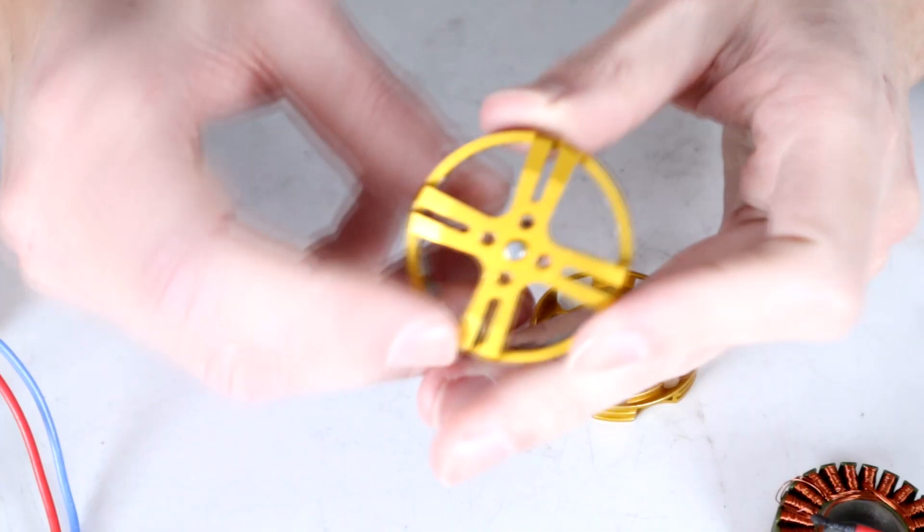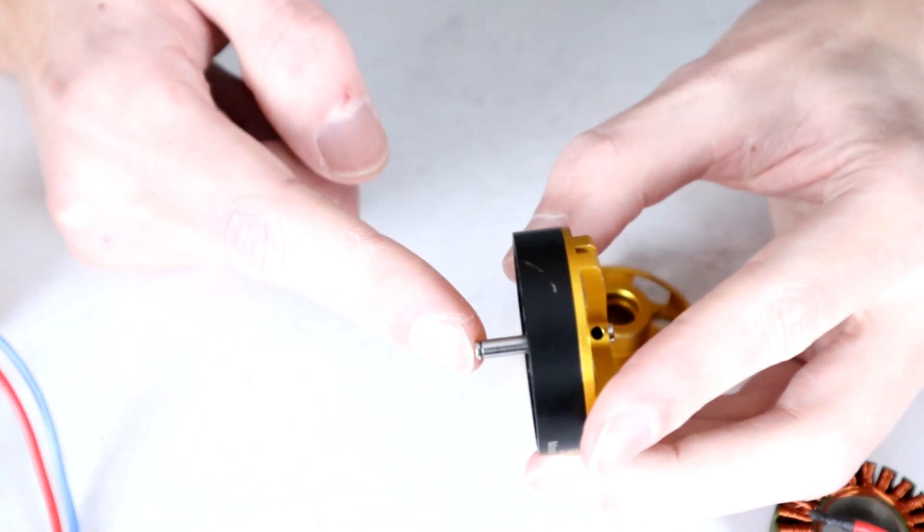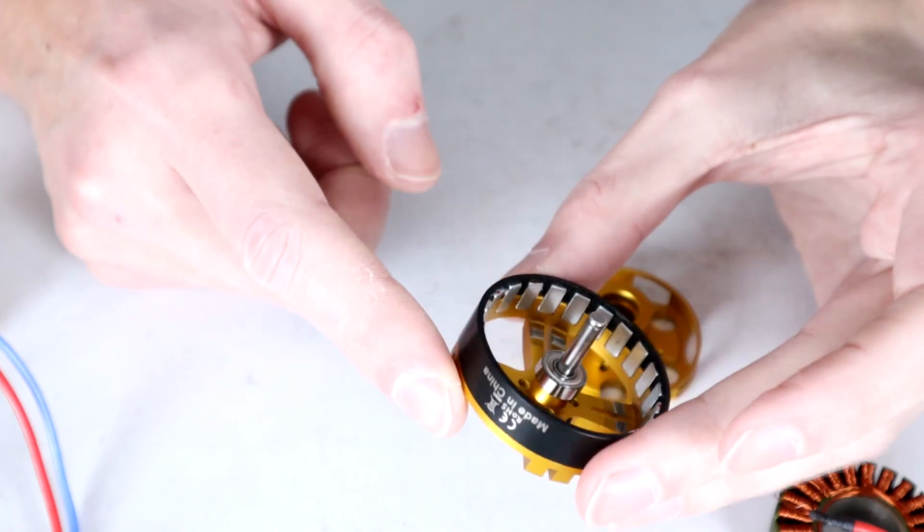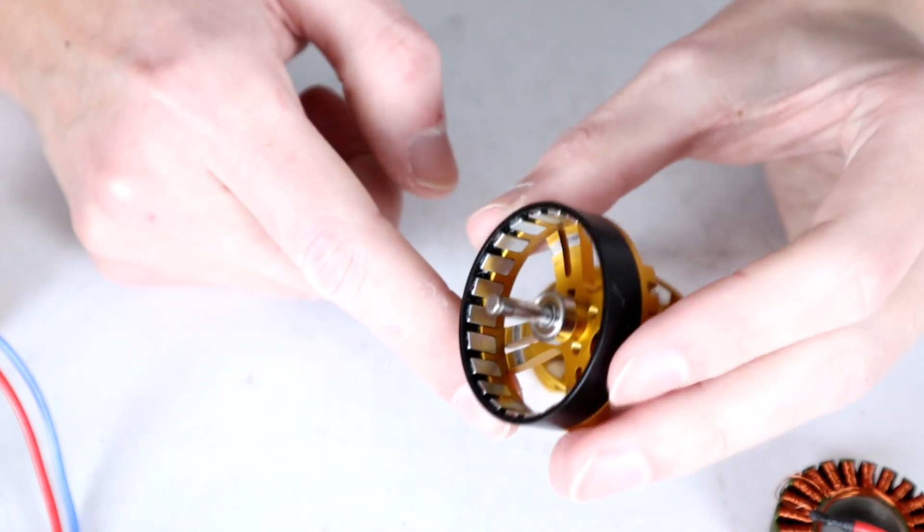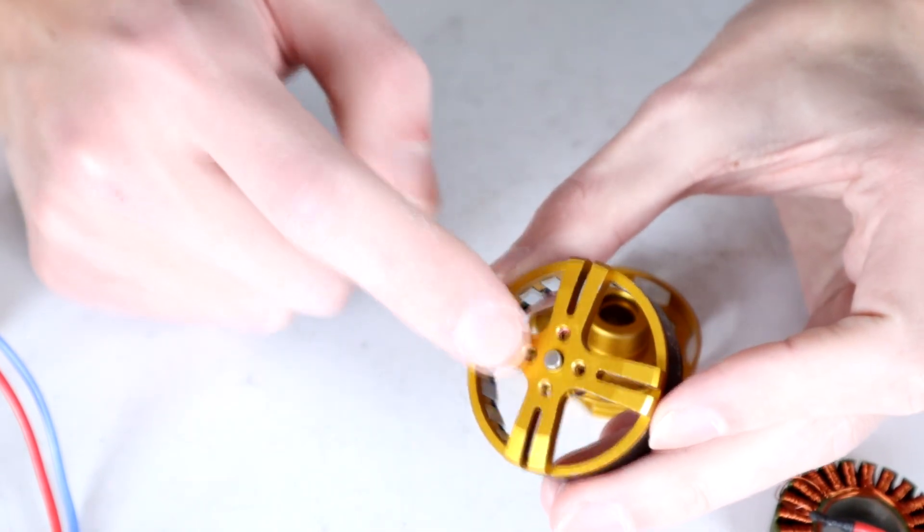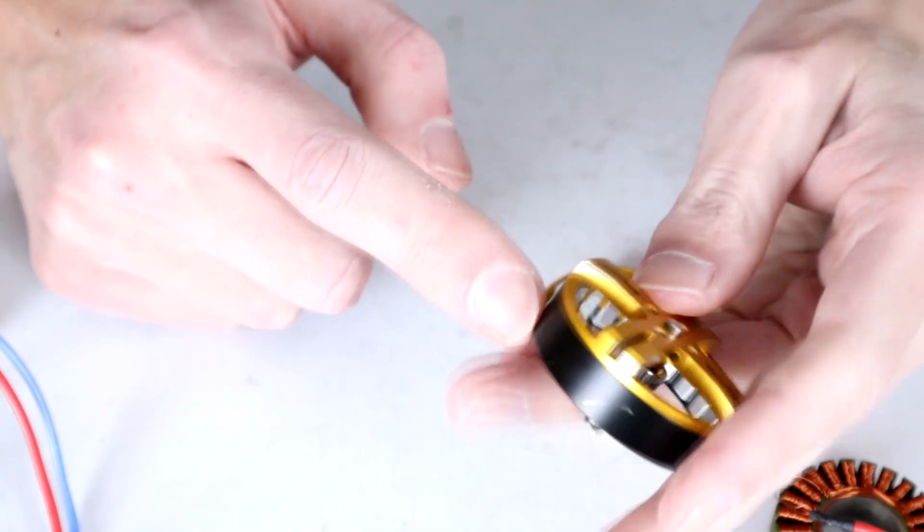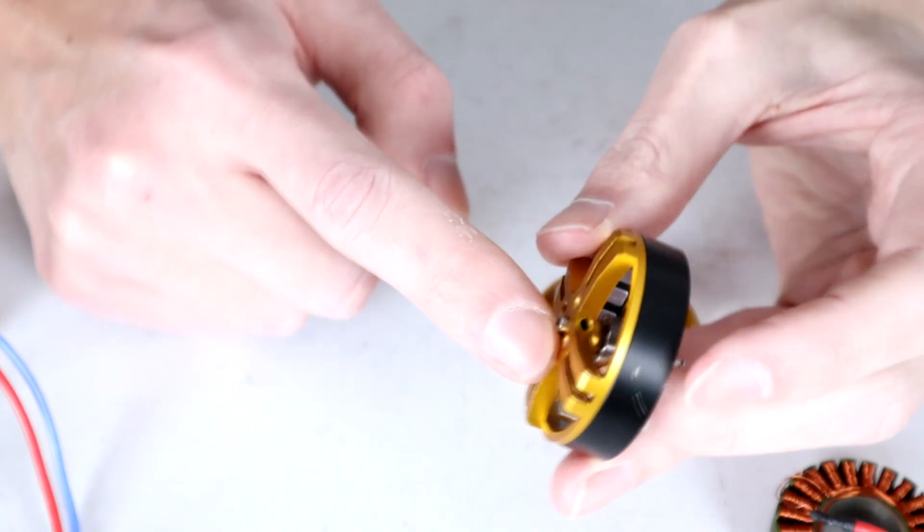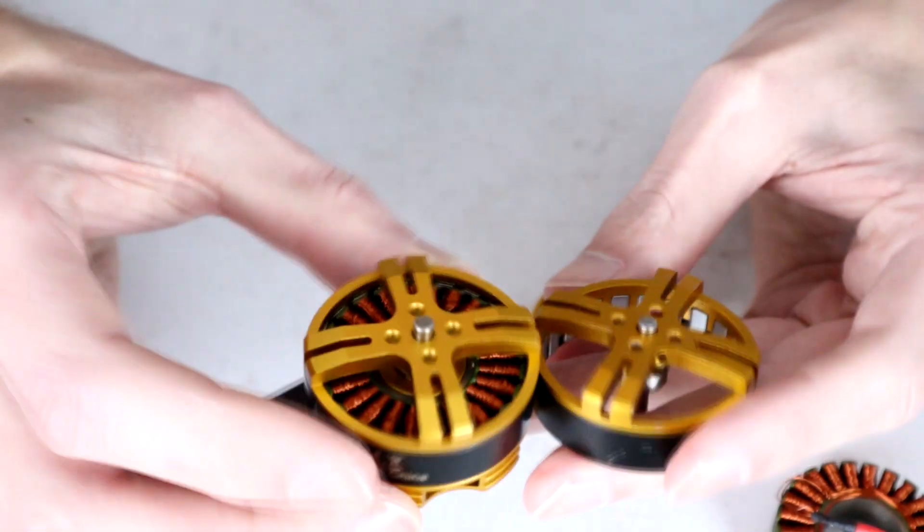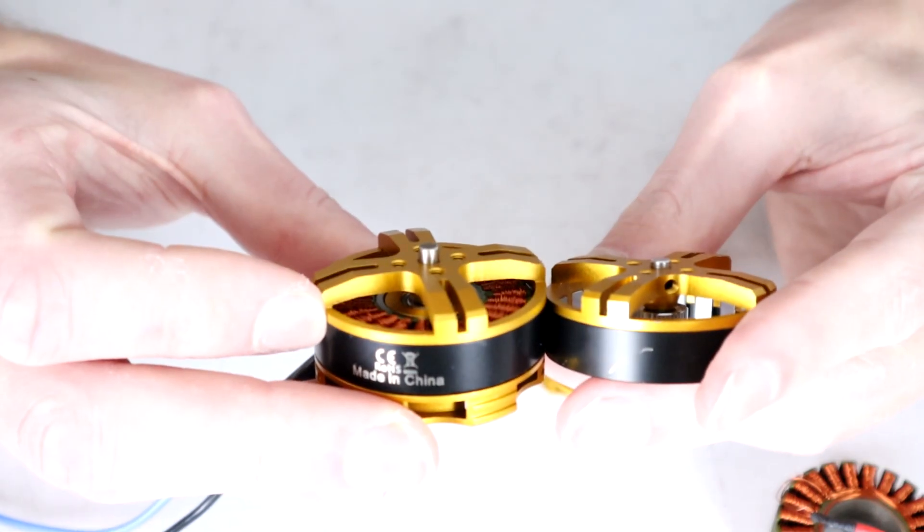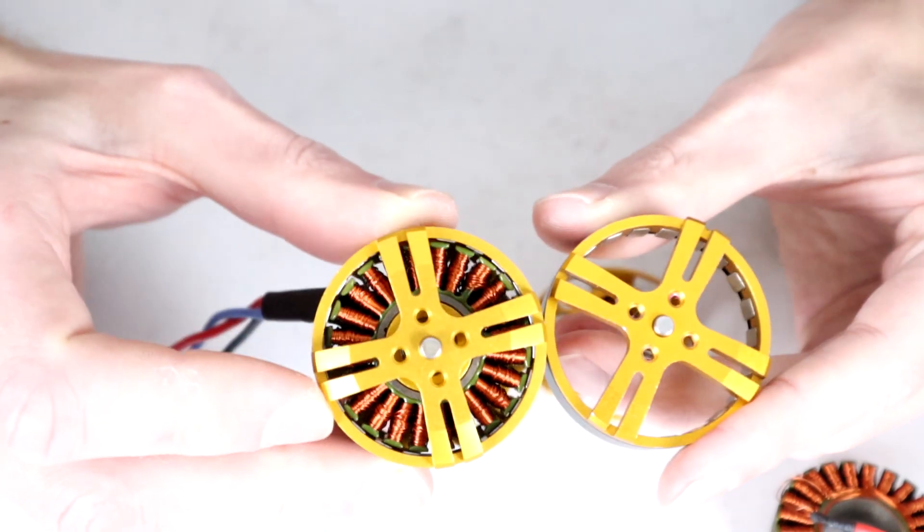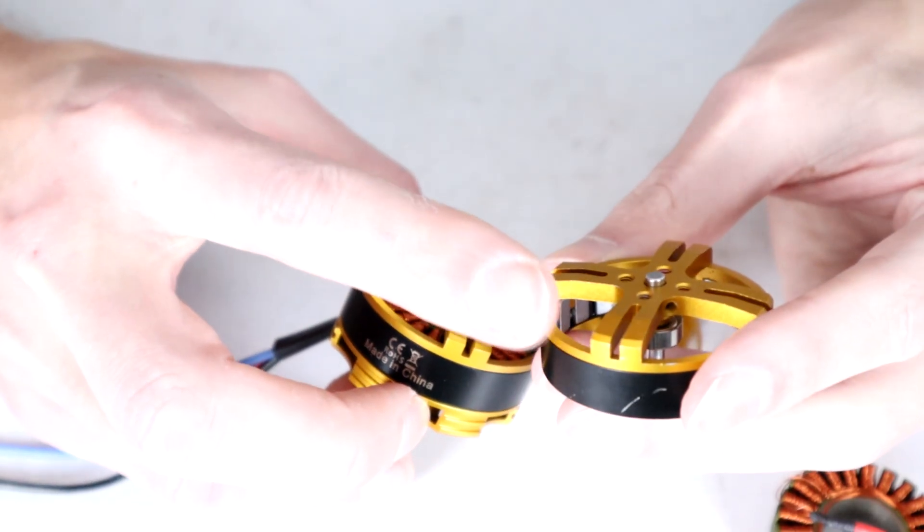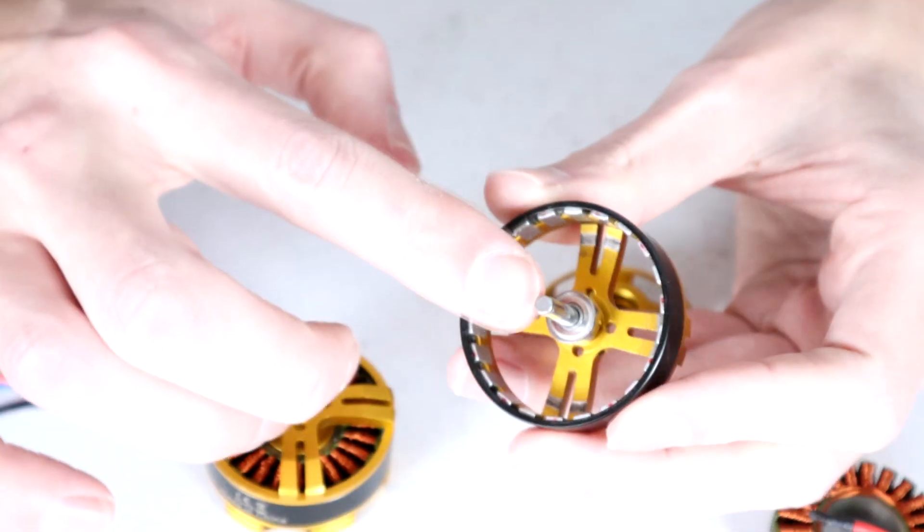Then on top of that we have the motor shaft here. This one looks okay, it looks like it has survived the combat totally fine. However, it is just a push fit in the top with a singular grub screw in through this hole here holding it in place.